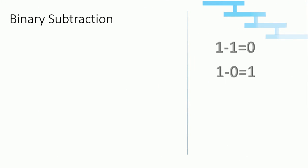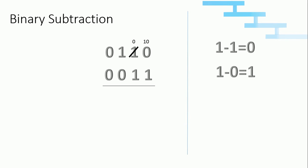Now we will see about binary subtraction. One minus one equals zero, and one minus zero equals one. We will see this in a four-bit binary value. Zero minus one: we can't subtract one from zero, so we are getting one from the nearest bit. When we get one from it, it becomes zero and it will become one zero.